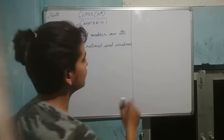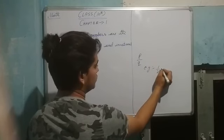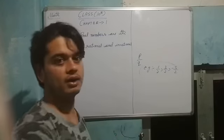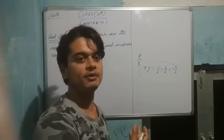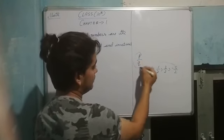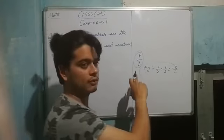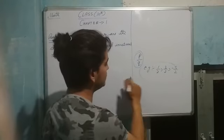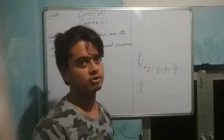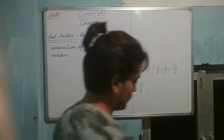There is a number that is P upon Q. For example, 1 by 2, 3 by 2 — what is the value of a rational number? The value of a rational number is a comparison. P upon Q is a rational number where Q is not equal to 0. And the value of an irrational number is not in this form.